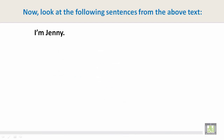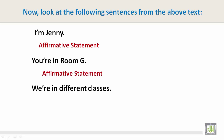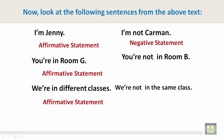Now let's look at the following sentences from the above text. 'I'm Jenny' is an affirmative statement. 'You're in room G' is an affirmative statement. 'We're in different classes' is an affirmative statement. 'I'm not Carmen' is a negative statement. 'You're not in room B' is a negative statement. 'We're not in the same class' is a negative statement.